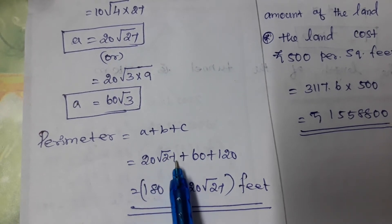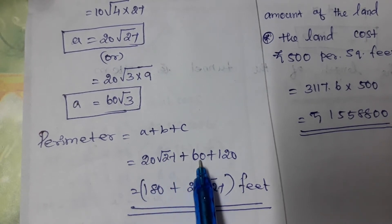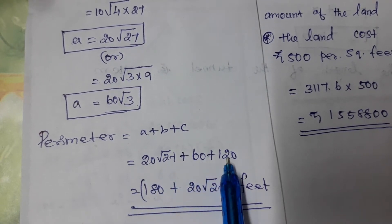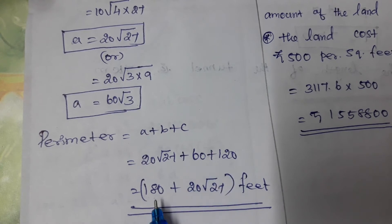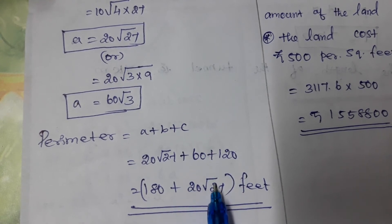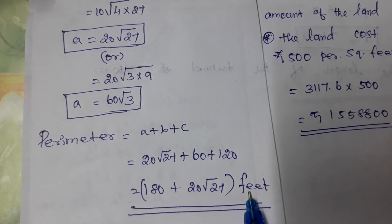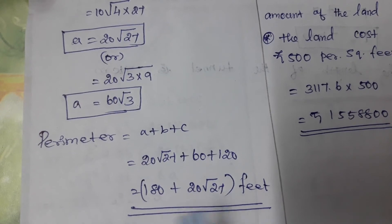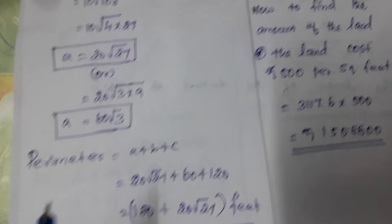The perimeter of the triangular land is A + B + C = 60√3 + 120 + 60 = 180 + 20√27 feet.